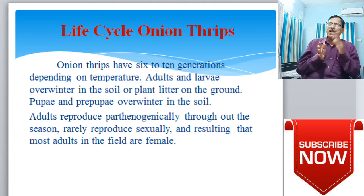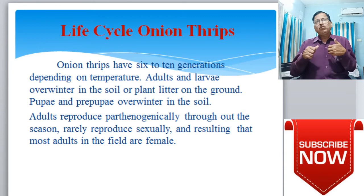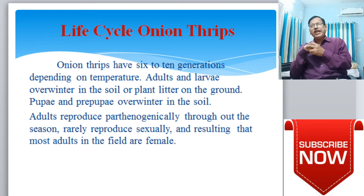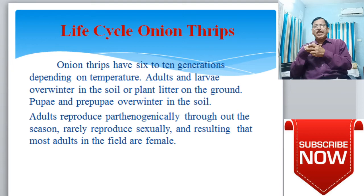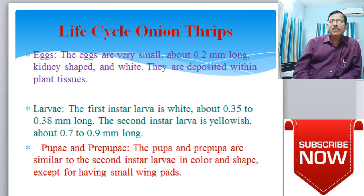Adults and larvae overwinter in the soil or plant litter on the ground. When temperature is excessively low, the pest enters a dormancy condition to survive. Pupae and pre-pupae enter the soil as a specific adaptation. Adults reproduce parthenogenetically throughout the season, rarely reproducing sexually, so most adults found in the field are female.